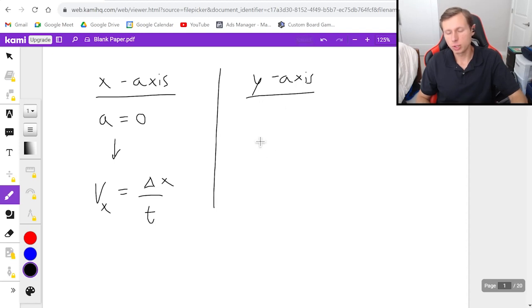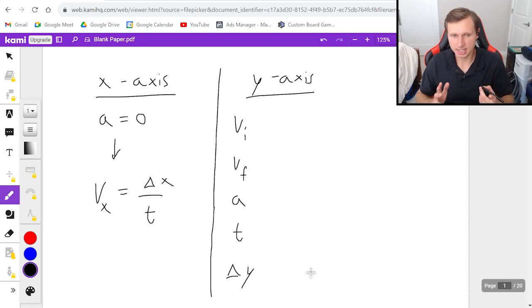And then in the y-axis, we do a little bit more. We're going to write out the five kinematic variables: v-initial, v-final, acceleration, time, and displacement in the y-axis. We know the acceleration will always be negative 9.8, and that's because we're talking about gravity here when we talk about projectile motion. And once again, the goal is if you know three of the five of these, then you can plug into any of the four kinematic equations that I talked about in my other video, and you can solve.